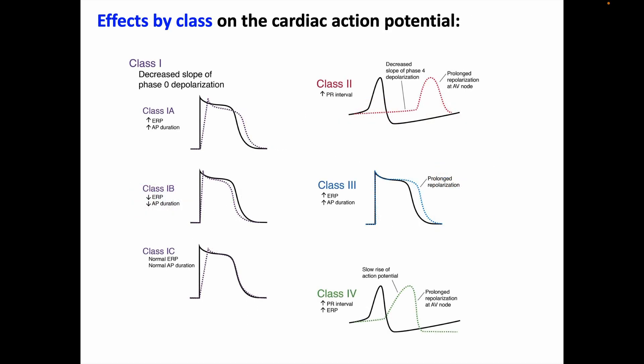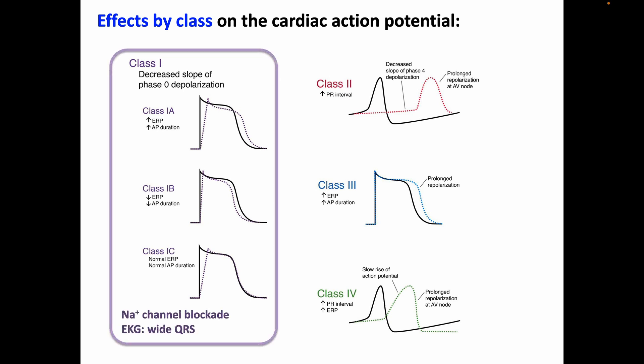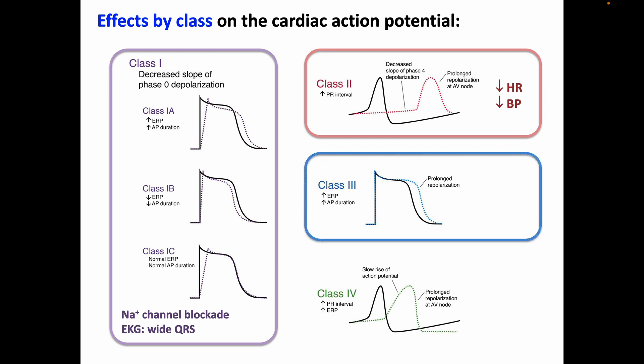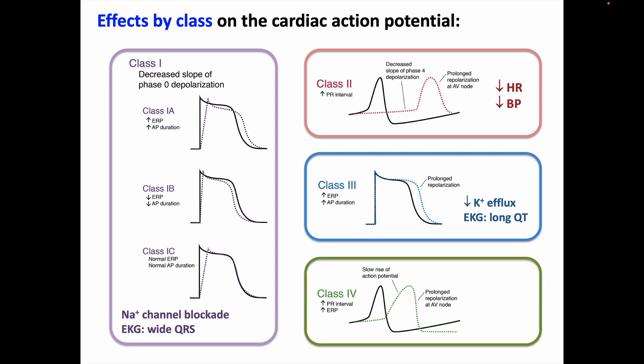The figures here show each class's effect on the cardiac action potential. Class 1 sodium channel blockers decrease the slope of rapid depolarization, resulting in QRS widening on the surface EKG. Beta blockers decrease the slope of phase 4 in pacemaker cells, causing bradycardia and lowering blood pressure. Class 3 potassium efflux blockade delays repolarization, prolonging the QT interval. Class 4 calcium channel blockers, like beta blockers, act at pacemaker cells, prolonging the time before the next beat occurs.